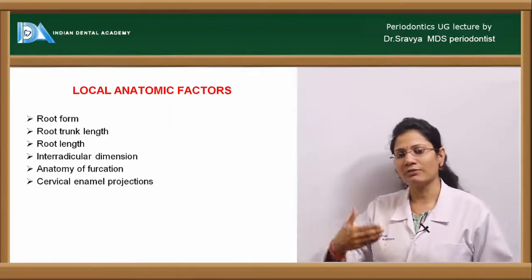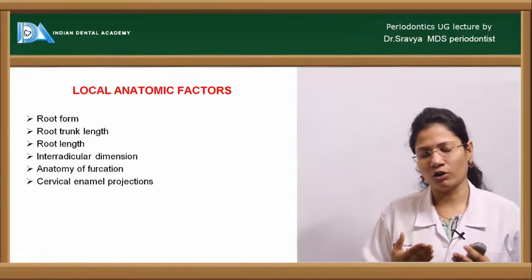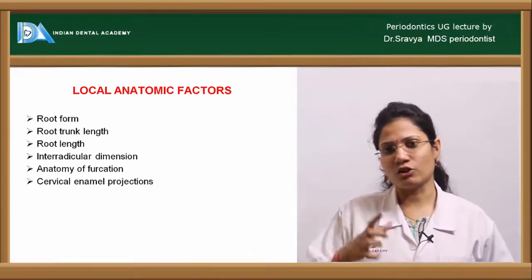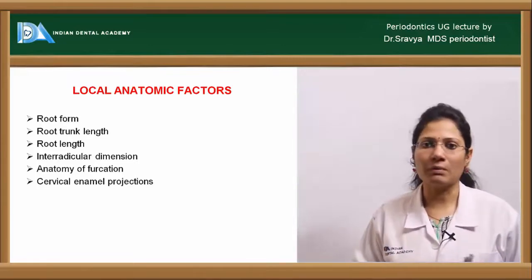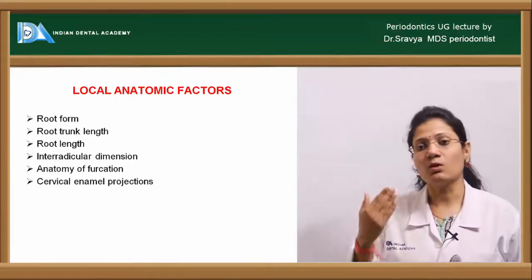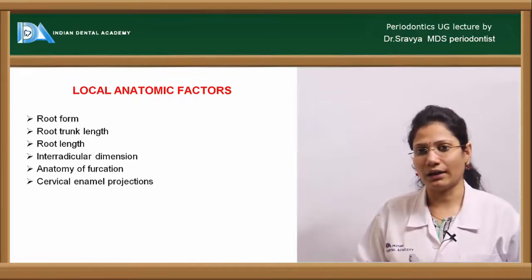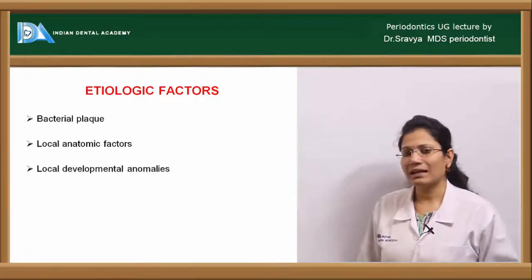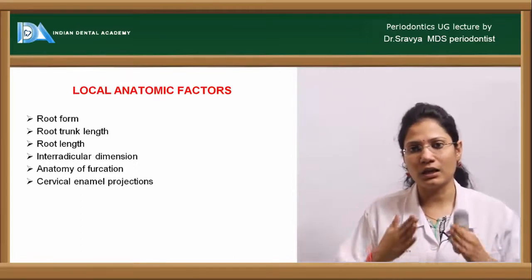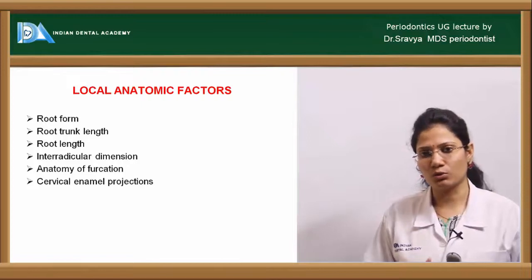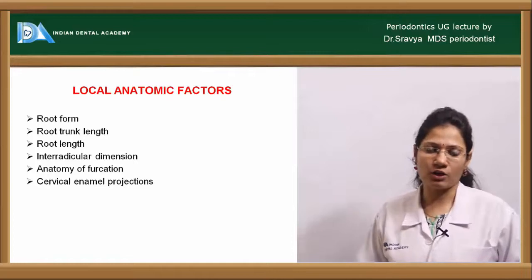If the furcation entrance is situated more apically and the root trunk length is long, involvement may occur at a later stage, but once involved there is a high chance the tooth will lose all bone support. The interradicular divergence between roots also determines whether the furcation is amenable to periodontal treatment.